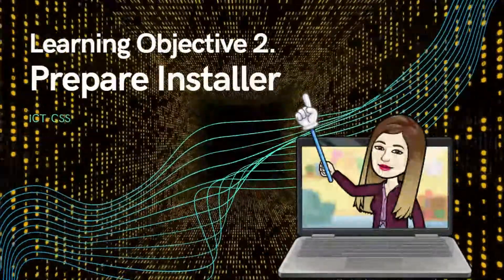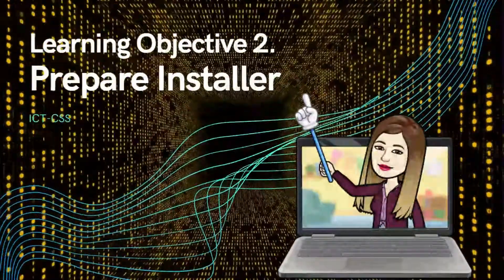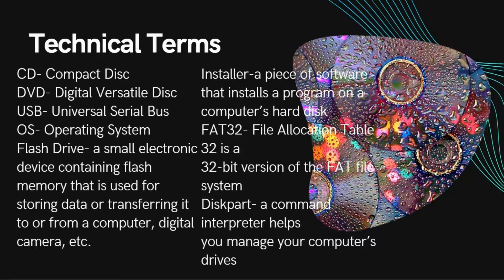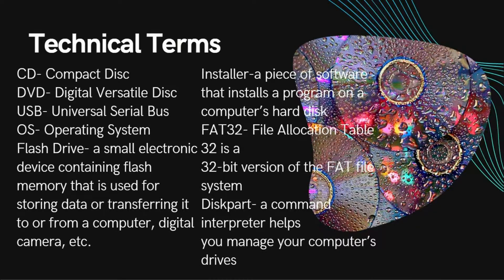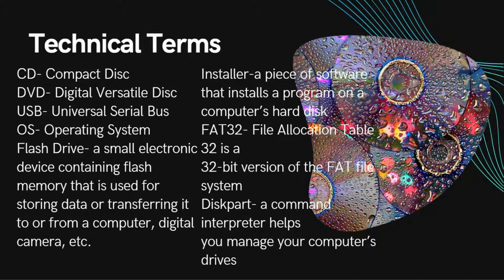Learning objective number two: prepare installer. Technical terms — CD: compact disc, DVD: digital versatile disc, USB: universal serial bus, OS: operating system. Flash drive: a small electronic device containing flash memory that is used for storing data or transferring data to or from a computer, digital camera, etc.